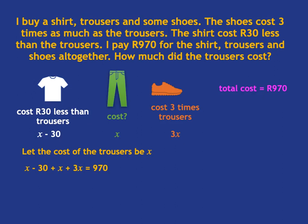Now I solve this equation. First, let's combine the like terms: x plus x is 2x, plus 3x is 5x. So it's 5x minus 30 equals 970. I want to get rid of the numbers on the left, so I add 30 to both sides, giving 5x equals 1000. I divide both sides by 5 and get x equals 200. Now I write my answer properly: the trousers cost 200 rand.